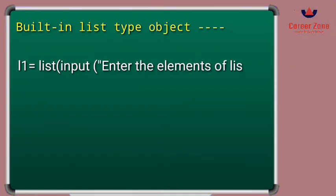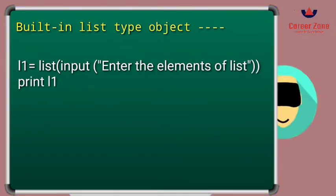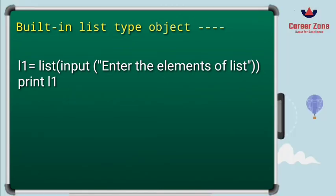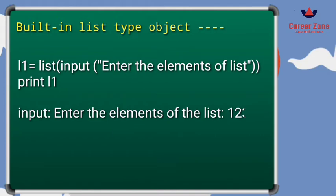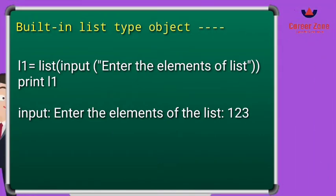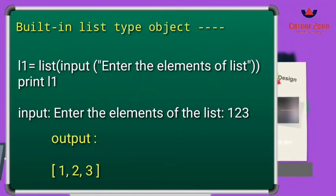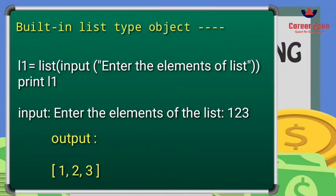If you want to create a list using an input function, you write an input line for the user to enter elements. Suppose the user enters 1, 2, 3 — those numbers will be separated and put as individual elements inside the list.